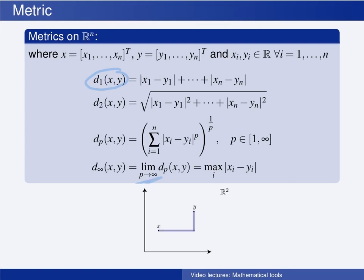When p goes to infinity, we obtain the d-infinity metric, which is simply the difference between xi and yi with the largest absolute value. In the two-dimensional case, it is the length of the longest line segment. The reason is that when we raise each difference to the power p and p becomes very large, the largest difference totally dominates the sum. When we then take the p-th root, we are left with the maximum difference itself.